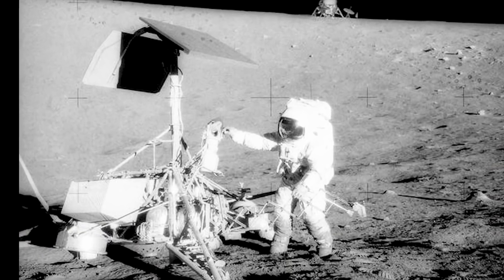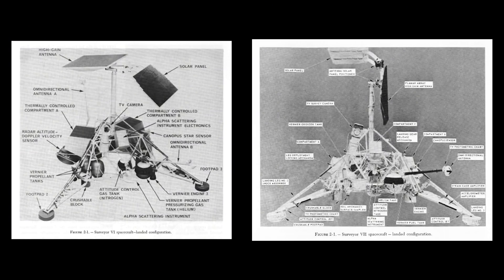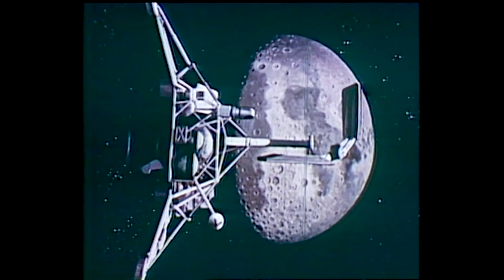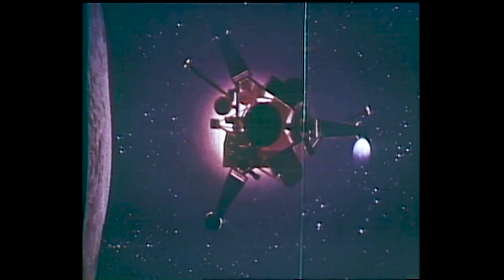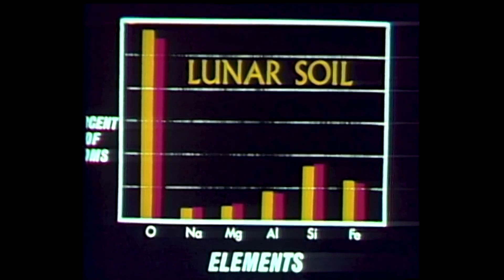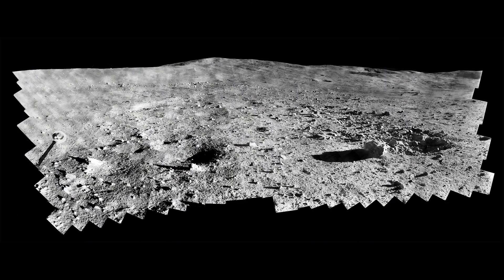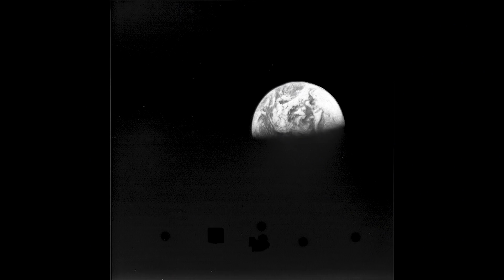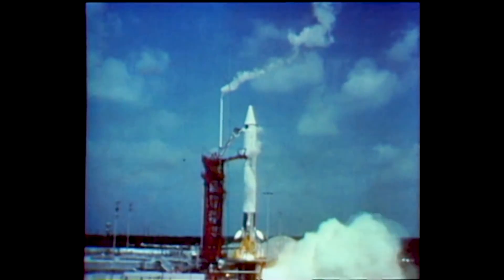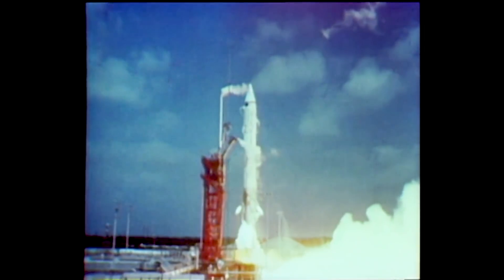It turns out the Surveyor landers were equipped with a lot of different sensors used to gather information, from alpha particle scattering devices to magnetic detectors. The high point was the astounding success of Surveyor. There were a total of seven craft launched; five of the seven made it and worked. They lost Surveyor 2 and Surveyor 4 — one lost its vernier motors mid-course, the other lost communications. But the amount of information gained was far and away above what they had even hoped to obtain: 87,000 images of the moon, the planets, the Earth, and the surrounding solar system.